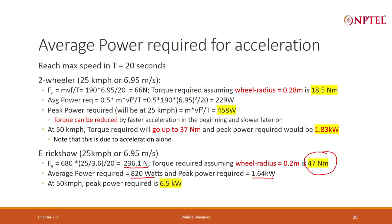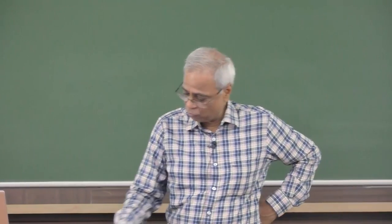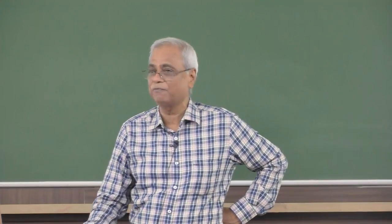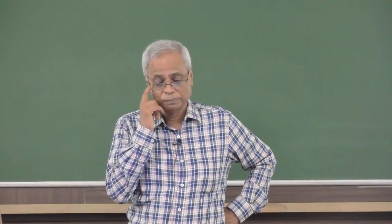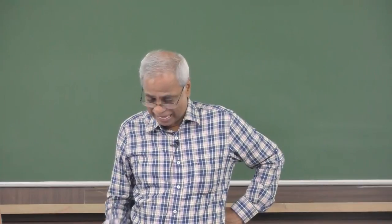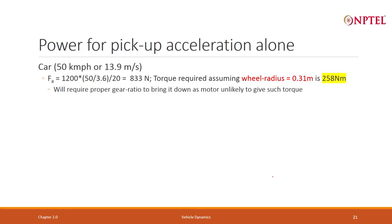At 50 km/h — now an E-Rickshaw does not travel at 50 km/h, but if it were allowed — the peak power requirement would go up to 6.5 kW. And I do the same thing for a car. A car at 50 km/h (13.9 m/s), in the same 20 seconds, my force requirement is 833 N and my torque requirement is 258 N·m. This is due to acceleration alone.